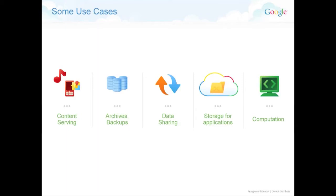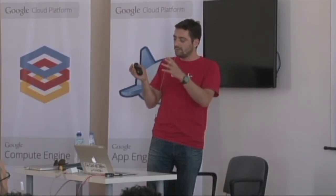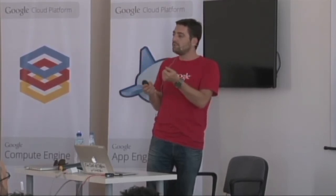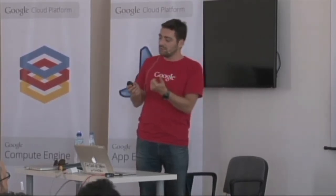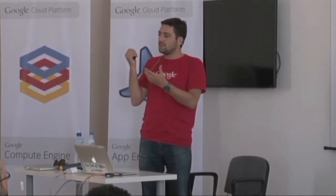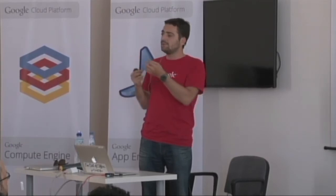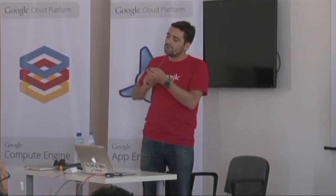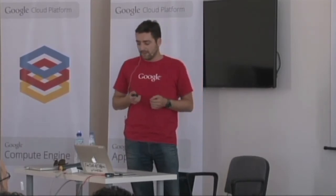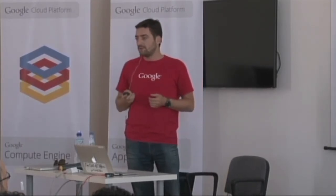A practical example: imagine you store your files in Central Europe. Someone in Italy goes on your website or uses your mobile application and requests a file — say, an update of the application. That file will be cached in one of the main cities in Italy, so the next user won't have to go back to Central Europe or the US. It will be much faster in terms of latency and bandwidth.